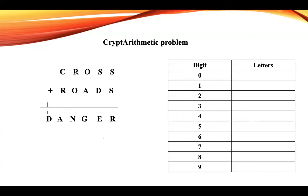Let us assign a value to S first, so that it becomes easy to solve this problem. We can find the R value and then start from the left side. We cannot assign one to S because one is already assigned to D, so we start from two. Two plus two gives four, so R value is four.